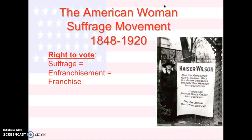So the American women's suffrage movement started between 1848 and 1920. And what does suffrage mean? All these three words mean the same thing: enfranchisement, franchise, suffrage — they all mean the right to vote. So women aren't going to get the right to vote until the 20th century.